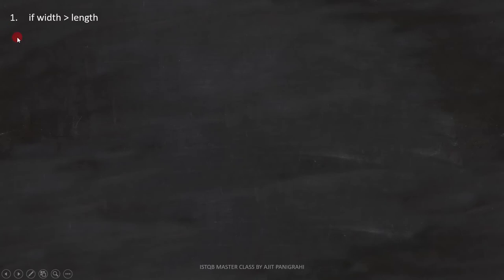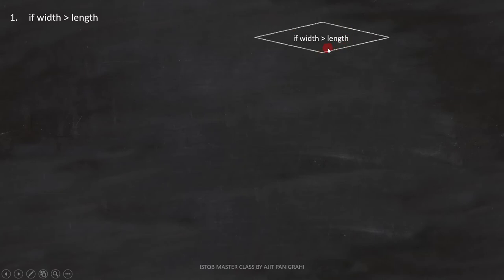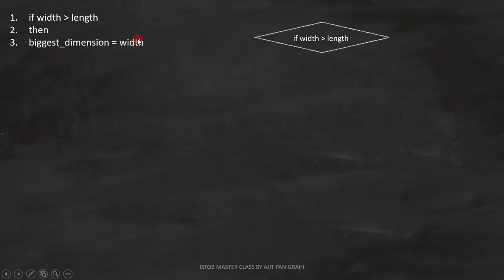The first line is: if width is greater than length. Now let's draw the flowchart for it. Since it is a condition, we have represented it like this. The second and third lines are: then biggest dimension equals to width. That means, if this condition is correct, biggest dimension equals to width. Since it is a statement, we have to represent it like this.